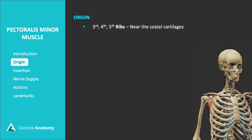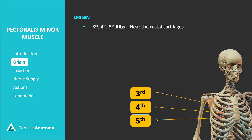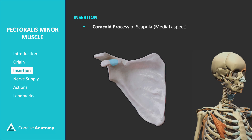The pectoralis minor originates from the third, fourth, and fifth ribs near their costal cartilages, with its fibers extending upward toward the scapula. This muscle inserts onto the medial aspect of the coracoid process of the scapula, allowing it to stabilize and move the scapula during shoulder movements.